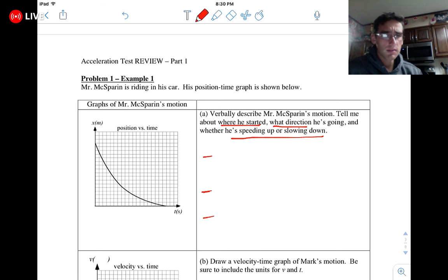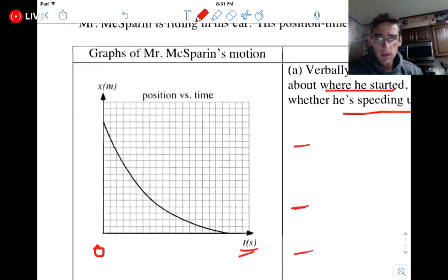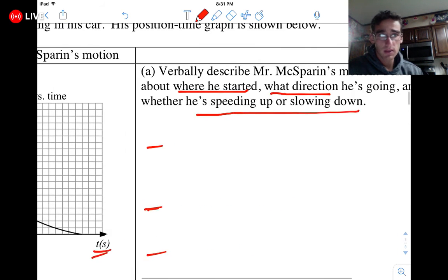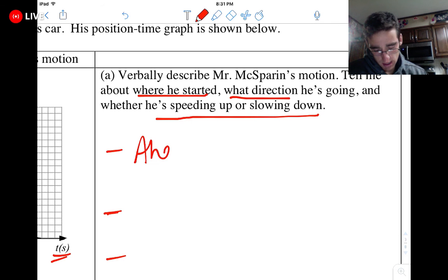So first off, where he started. So we know that this is time, right? So zero time is right there. Let's make this a little bigger. Now zero time is right there, which means that the starting point is here. So if I think about what distance, remember distance is over here, what distance or what location did I start at? As long as I say something about it not being at zero, that's kind of what I'm looking for. So I would say something like ahead of zero.